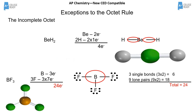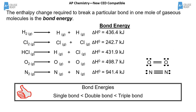Some molecules are exceptions to the octet rule. Hydrogen is satisfied with two electrons; beryllium is satisfied with four; and boron is satisfied with six — though boron can have eight, it's happy and stable with six. These are the key exceptions to remember.